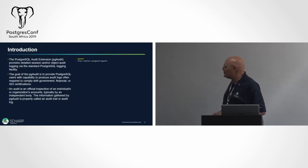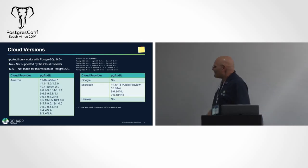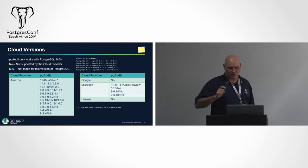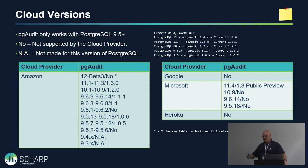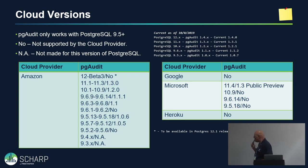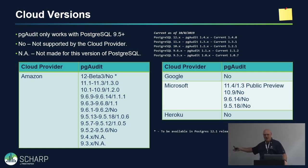There are unique versions of pgaudit for each Postgres version starting with 9.5. On Amazon RDS, older versions like 9.3 and 9.4 never supported it; early 9.5 and 9.6 versions don't support it but later versions do. Version 12 Beta 3 does not support it, but the final release will. Amazon technically doesn't support anything below the .1 release, so pgaudit support will come with Postgres 12.1.